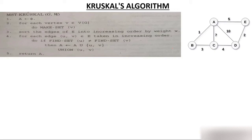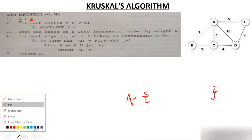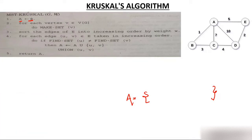Now let's understand what Kruskal's algorithm is about. The first step says: create a set A and initialize it with empty — there is nothing in A. The second step says: for each vertex V belonging to the graph, do Make-Set(V). How many vertices do you have? Five. So I'll make sets for A, B, C, D, and E.